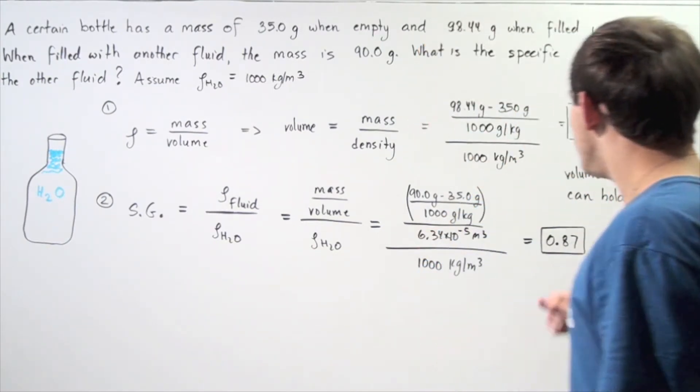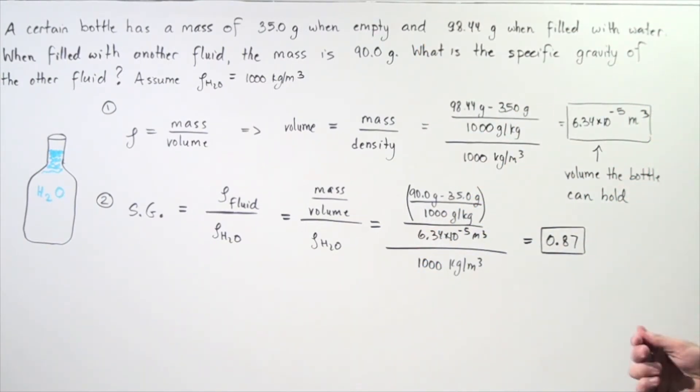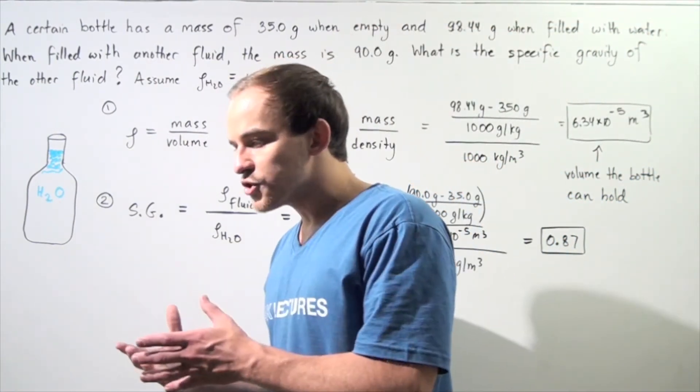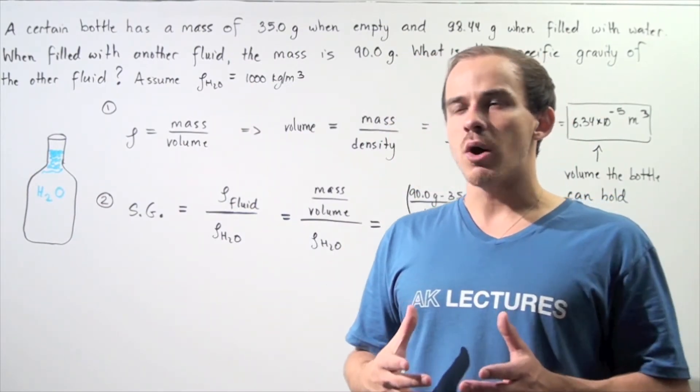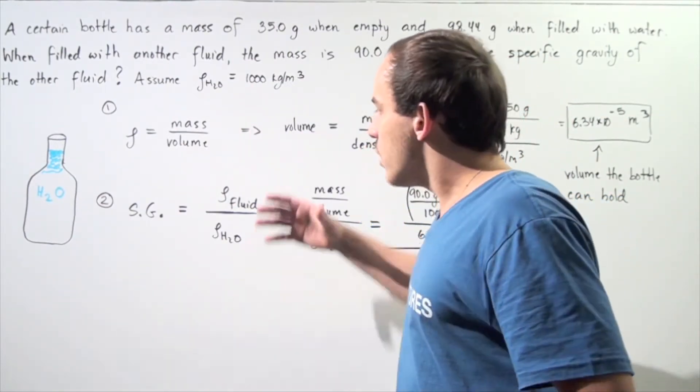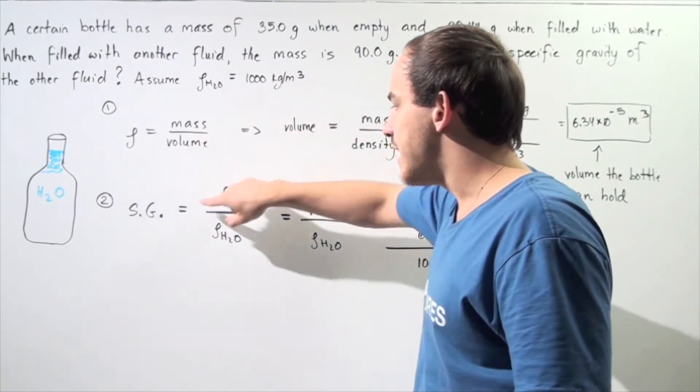we actually want to use this information to calculate the specific gravity of our object. In other words, we want to find the ratio of the density of the fluid to the density of water.